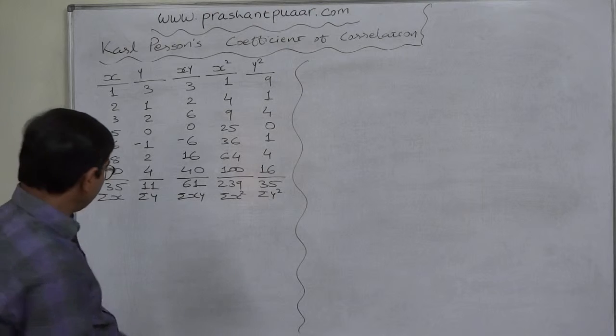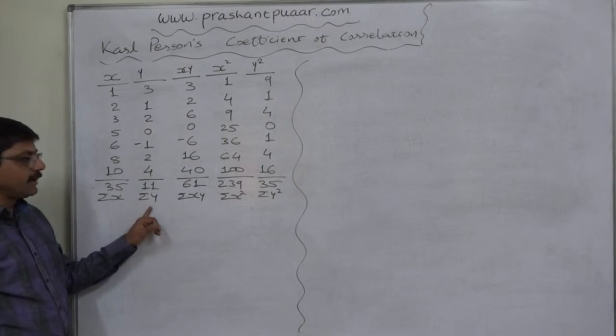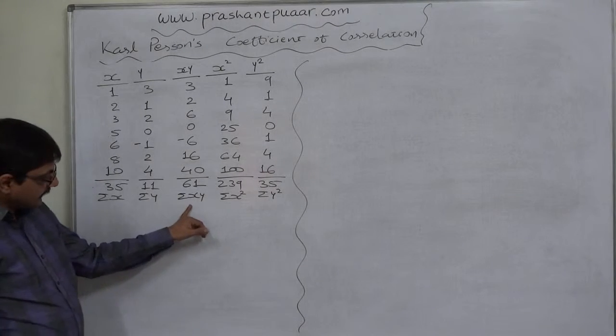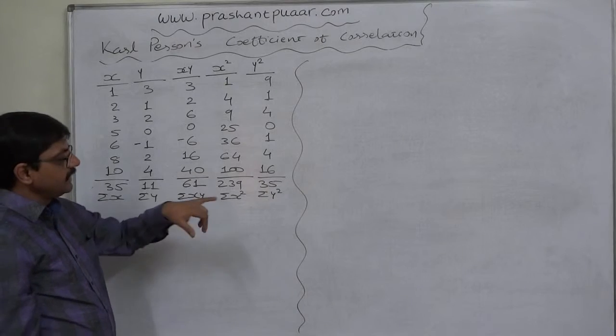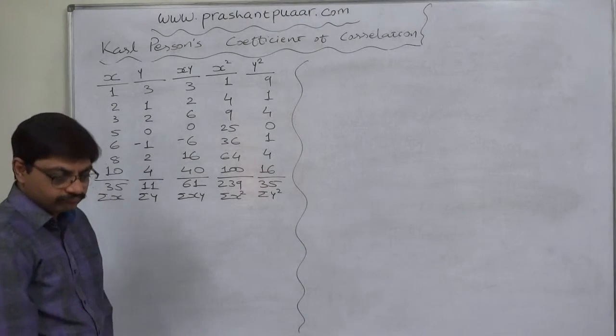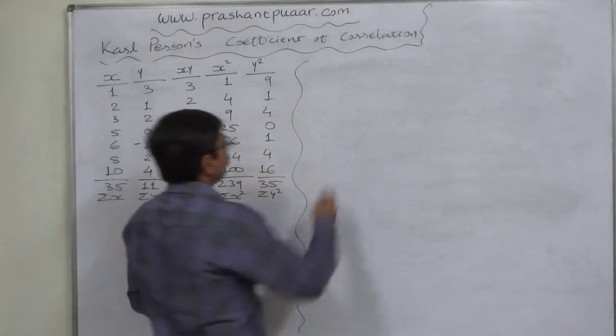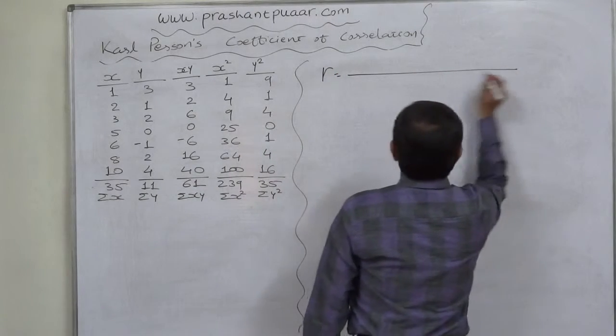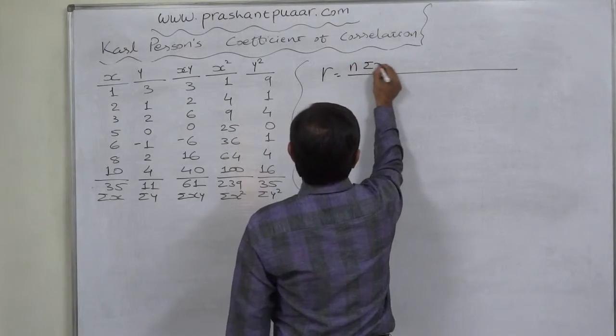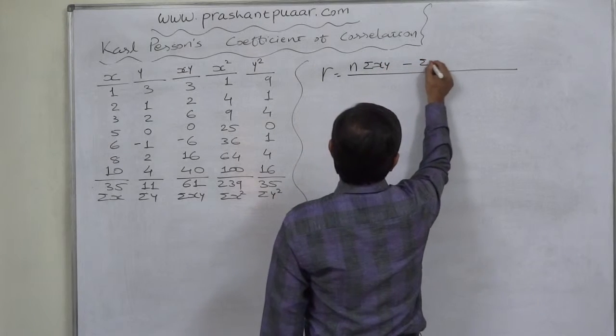In the same way, we need squared values of Y: 3 squared is 9, 1 squared is 1, 2 squared is 4, 0 squared is 0, minus 1 squared is 1, 2 squared is 4, and 4 squared is 16. Summation of all these values is 35. Ultimately we have all five summations required: Sigma X is 35, Sigma Y is 11, Sigma XY is 61, Sigma X squared is 239, and Sigma Y squared is 35.